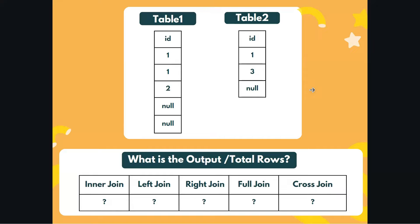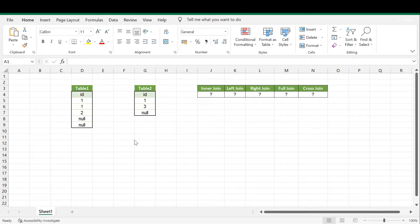Hello everyone. In this video I'll be covering one of the SQL interview questions asked in HCL interviews. We are given two tables: Table One with ID records 1, 1, 2, NULL, NULL and Table Two with ID records 1, 3, NULL. The question is how many records will we get for each join — inner join, left join, right join, full join, and cross join. We'll also be executing these queries in SSMS.